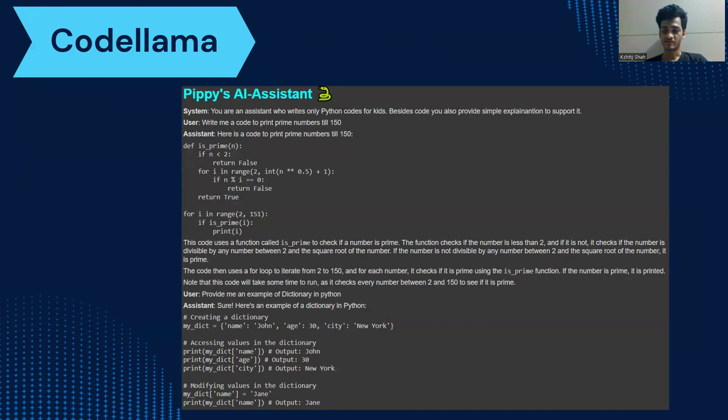Next is Code Llama. As I said, Code Llama accuracy is very good and here's one of the examples. I have asked it to print all prime numbers till 150 and it's able to do so. Besides generating the code, it's also been able to provide me a proper explanation with respect to that. Another example is I asked it to write me an example of dictionary in Python. Code Llama is successful in doing that too. It's able to provide me very user-friendly examples which kids can understand.